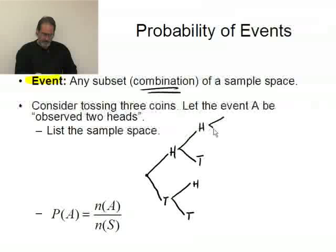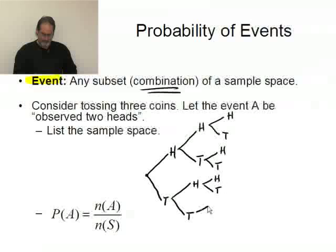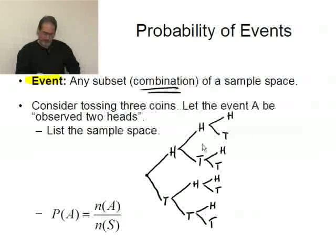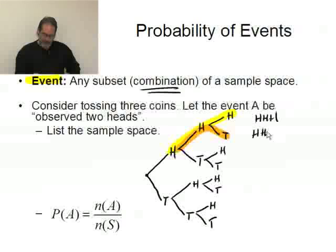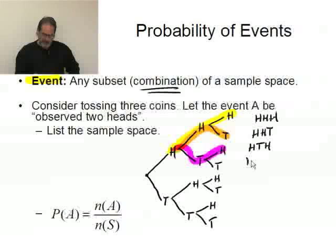Branching off further: if I had head on the first coin and head on the second, I could get a head or a tail on the third. Likewise, continuing the branching for all other paths. This represents everything that could happen if I were to toss three coins. Following along each path gives me every possible combination — head-head-head, head-head-tail, head-tail-head, and so forth.